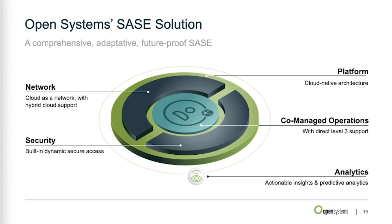Open Systems has been a pioneer in combining network and security services since the early 1990s — that's really our core competency. Gartner has now provided us the platform to excel and confirm we've been on the right path. We leverage our platform to provide a holistic service — not only providing insights into what applications customers run, but also running analytics on top to give actionable insights, predictive analytics, and hence actionable results.